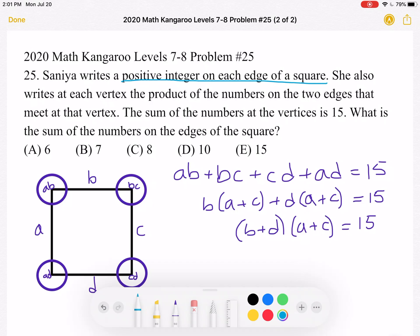And we also know that at each vertex, she writes the product of the numbers on the two edges that meet at that vertex. So at this vertex, the two edges that meet are A and B, so this vertex will be labeled AB. By the same logic, this one will be BC,